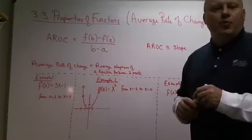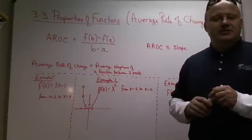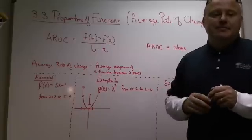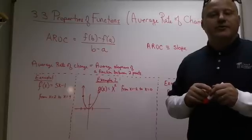Hi, this is the lecture review for 3.3. The title of this section is Properties of Functions. It has lots of things that we're talking about in this section. At least it's in the book, but there's only one thing that we're actually going to focus on, and that's the average rate of change.